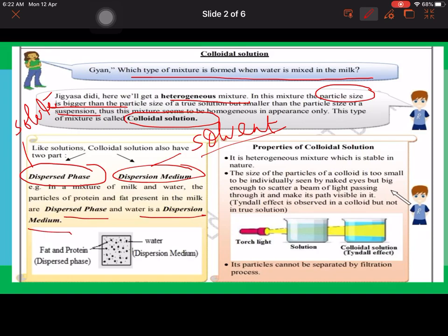Properties of colloidal solution: It is a heterogeneous mixture which is stable in nature. The size of the particles of colloid is too small to be individually seen by naked eye, but big enough to scatter a beam of light passing through it.